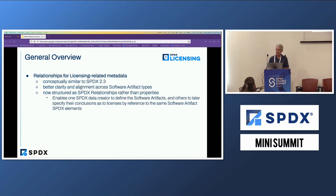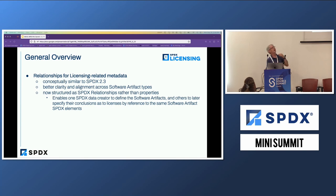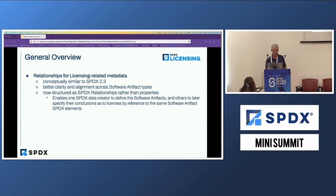Another big change we made in the model is that we used to have licenses as properties of the element — so if you had a license concluded or a license declared, those would be properties directly on the element. The downside is that if you have an SBOM with a package element and you later decide what the concluded license is — very typical, by the way — you would have to create a new package element because they're immutable. So in 3.0, we've moved them to a relationship: rather than a concluded license property, you'd have a relationship with a relationship type concluded license that goes from the package to the license. That's a fairly significant structural change in the model.